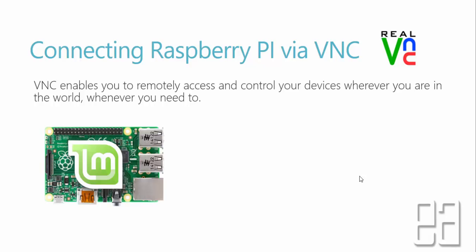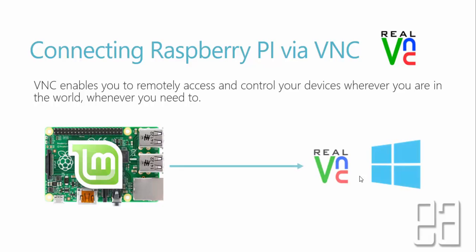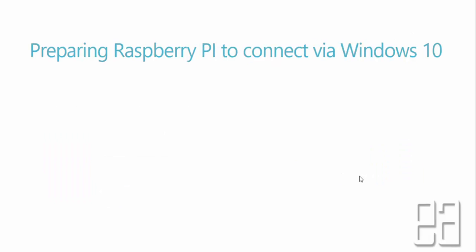So you will be doing something like this: our Raspberry Pi is currently running Ubuntu Mate operating system, and we are going to connect it via VNC from Windows 10 operating system. That's what we're going to do.